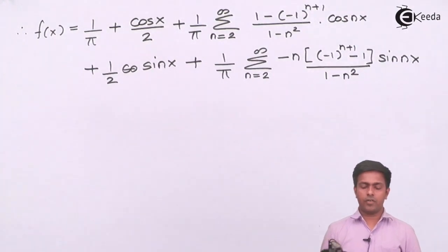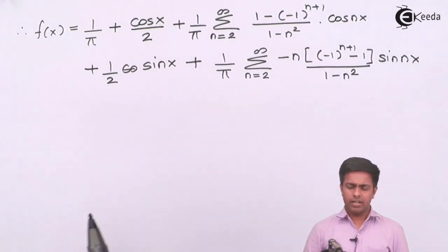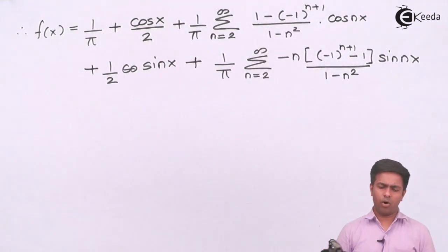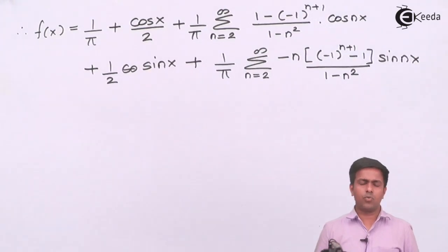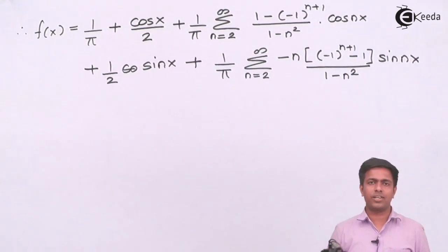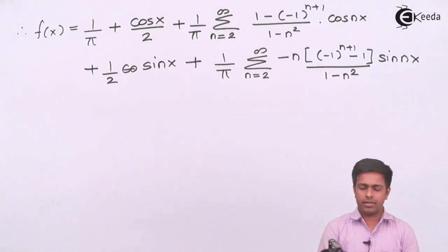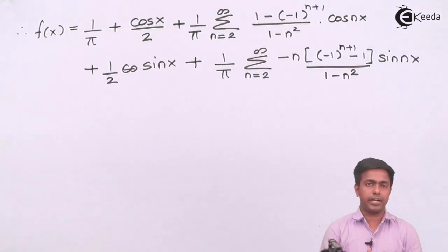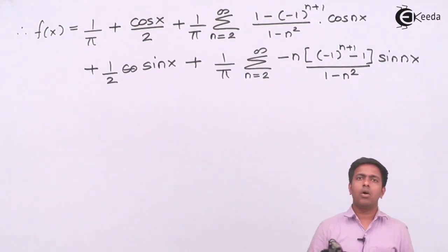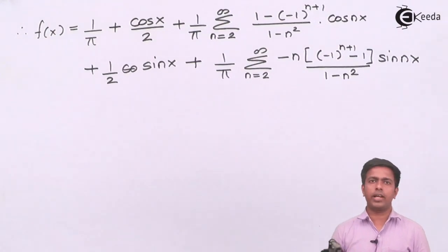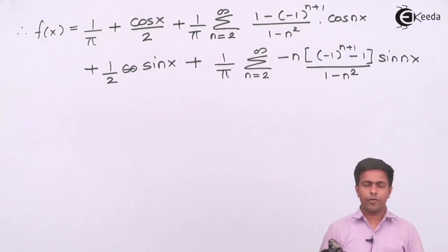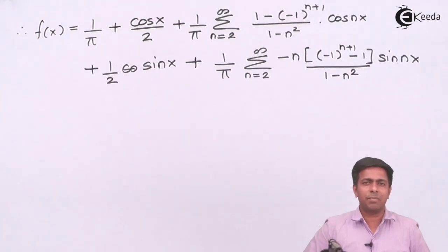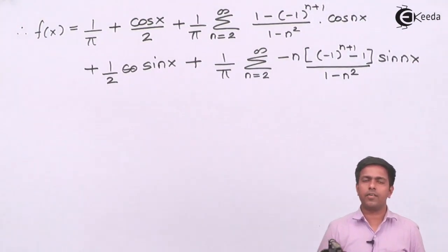This is the Fourier series for the given function. You may expand the summations further or leave in this form. I hope you paid attention and understood the whole video, and now you know why we need to find b₁ and a₁ separately in Fourier series. If you want to learn more about engineering mathematics and Fourier series, stay tuned with Ikeda. Thank you very much.